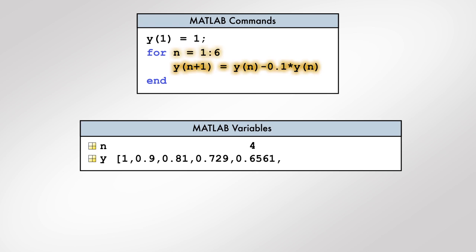When the loop variable n takes on the last value in the vector, the body of the for loop is executed one last time and the for loop is terminated.